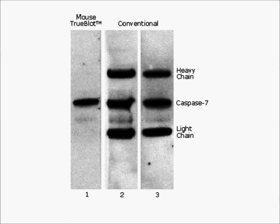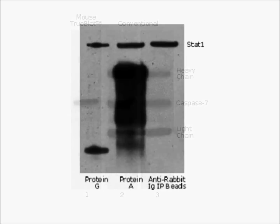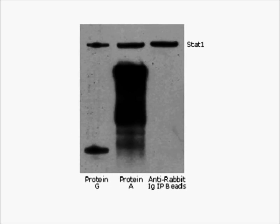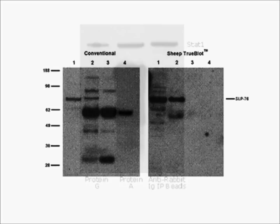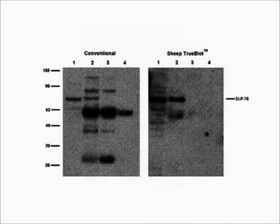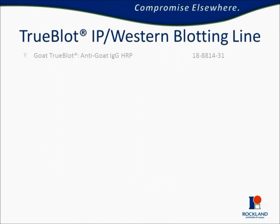When used along with an immunoprecipitation method, Trueblot will only target the native primary antibody of one of the 4 host species, and not the denatured fragments of the immunoprecipitating capture antibody.